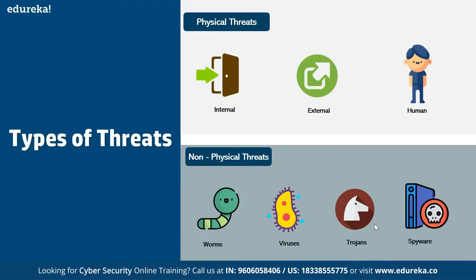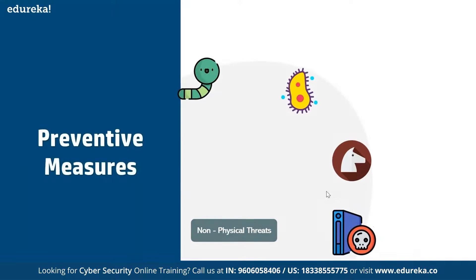Security threats are divided into two parts: physical and non-physical. Physical threats can be internal within your data center, external through third-party service centers, or threats to humans. Non-physical threats include malware, worms, viruses, trojans, spyware, ransomware, and more.